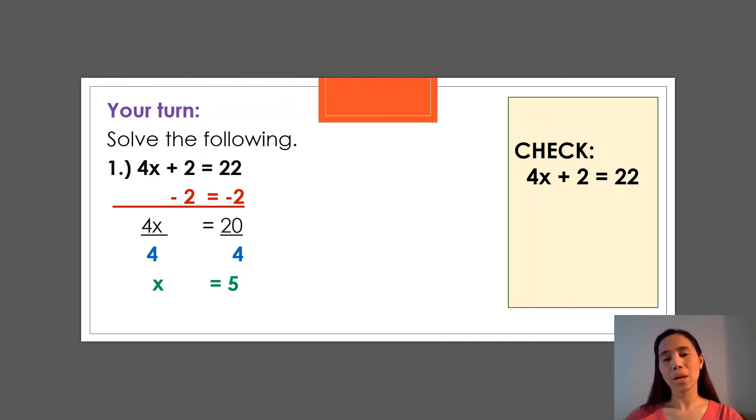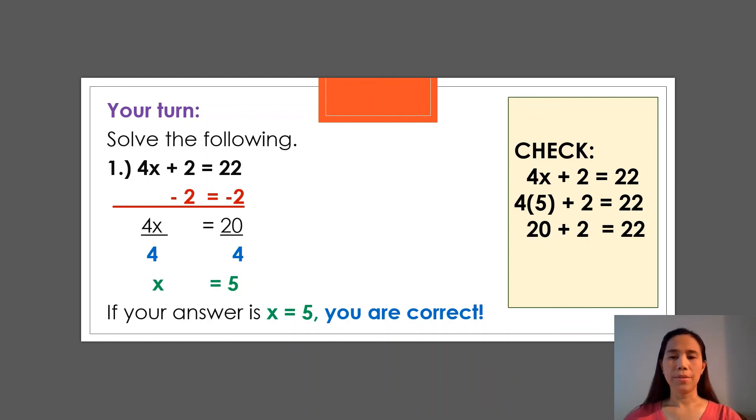Let's check if we really are correct. So copying this: 4x + 2 = 22. So substituting x as 5 because we've got x = 5 here. So 4 times 5 plus 2 is equal to 22. 4 times 5 is 20 plus 2 equals 22. Adding 20 plus 2 equals 22. And on the other side is also 22. So are we correct?